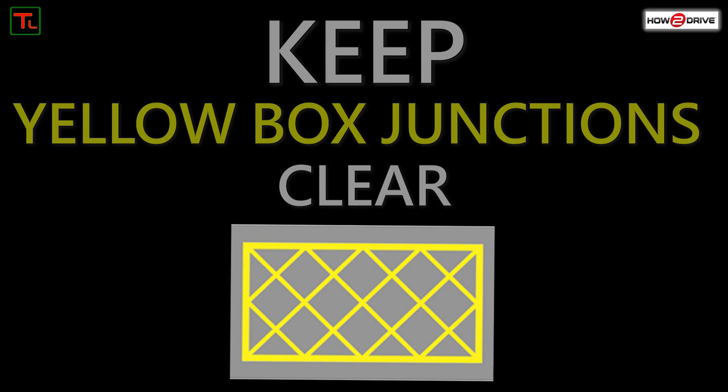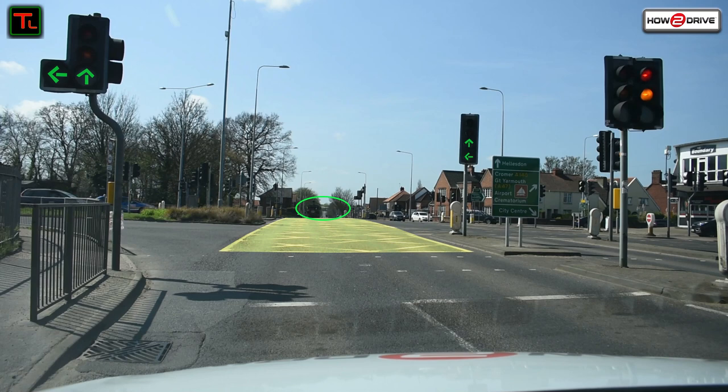Next up is a yellow box junction — we're going to be going ahead. Traffic lights are green. We pause to highlight the yellow box, and we're looking well ahead into that exit section just to make sure our exit is clear before entering, as we need to make sure these junctions remain clear. Now we're going to check those mirrors and emerge safely.